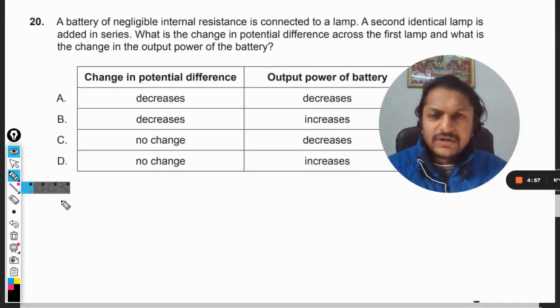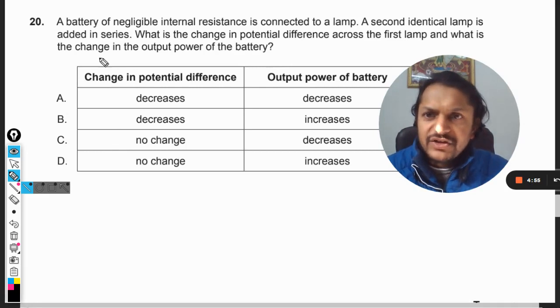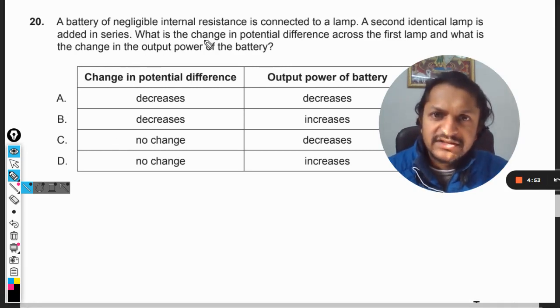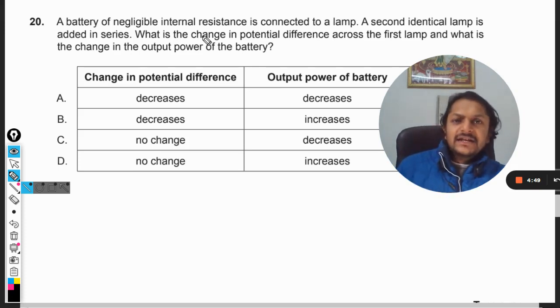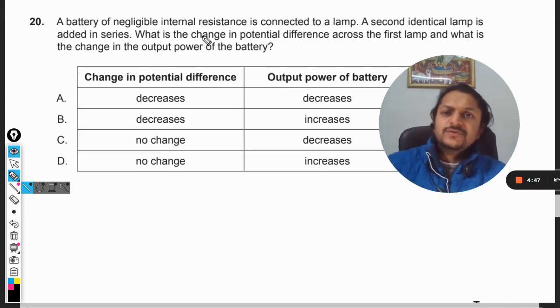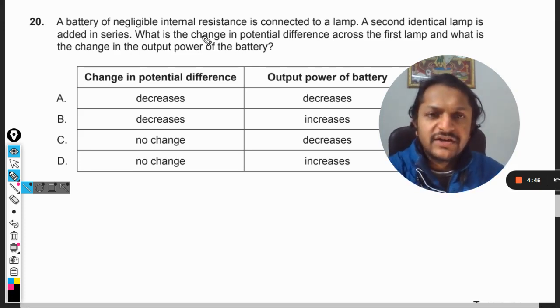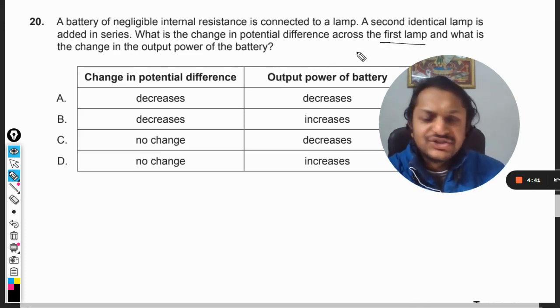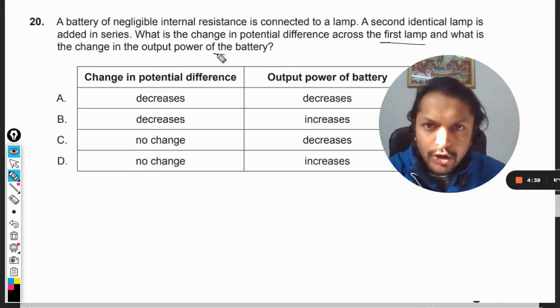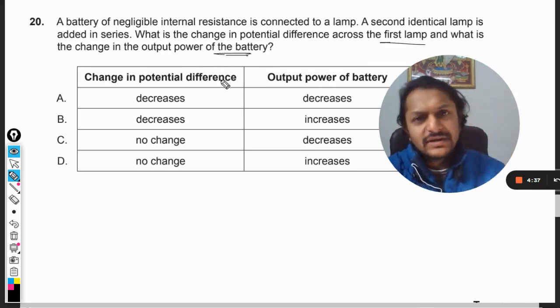Okay dear students, let's see what is in this question. A battery of negligible internal resistance is connected to a lamp. A second identical lamp is added in series. What is the change in potential difference across the first lamp, and what is the change in the output power of the battery?